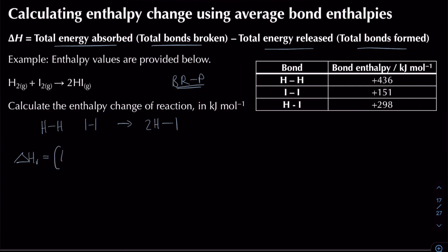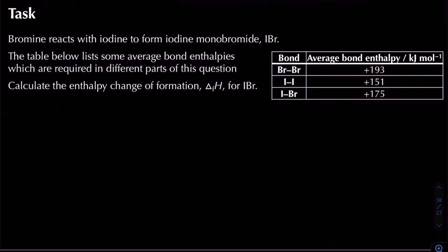Taking the bond enthalpy for the H–H bond (436 kJ/mol) and adding the I–I bond enthalpy (151 kJ/mol) gives the total bonds broken. Then I subtract two lots of the H–I bond enthalpy (2 × 298). The result is an enthalpy change of −9 kJ/mol.